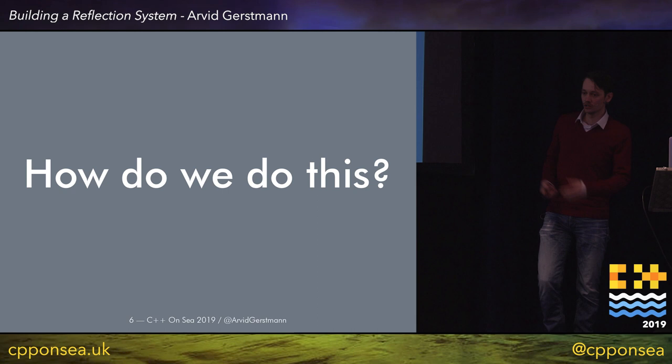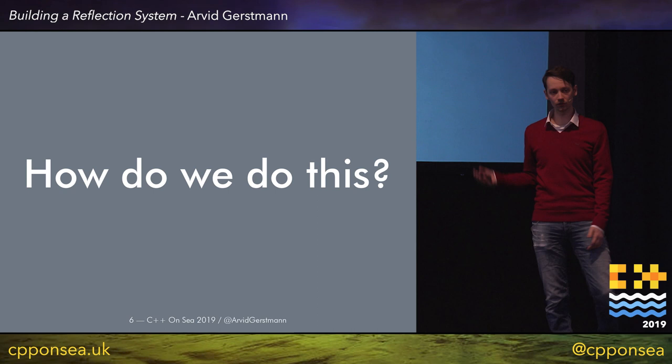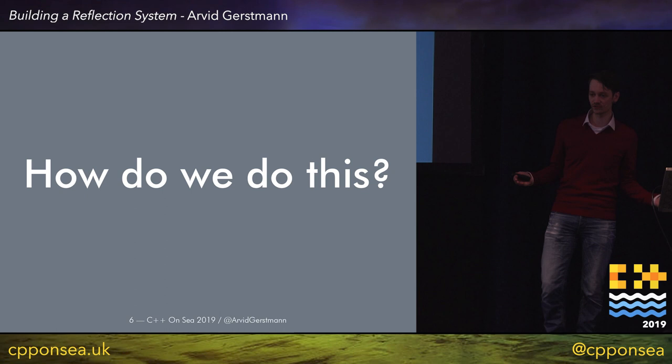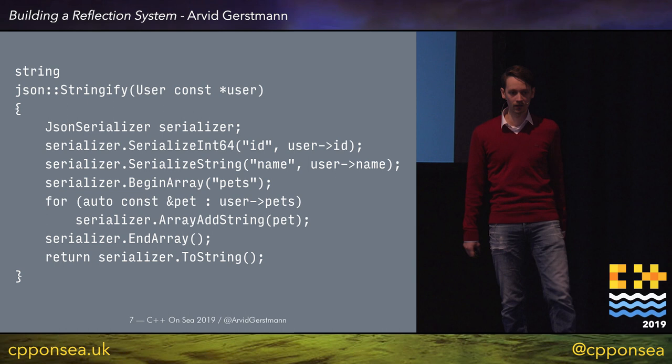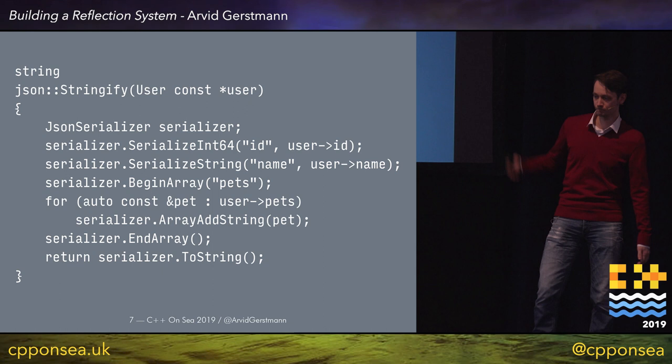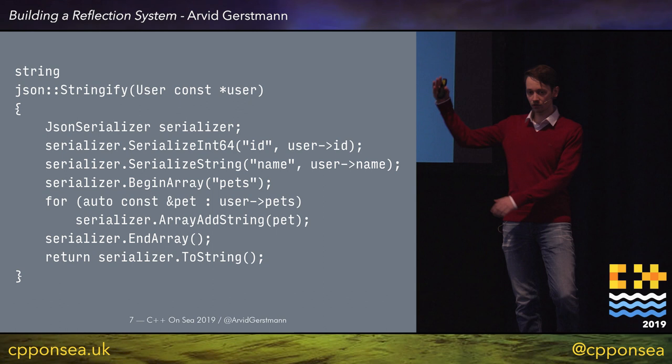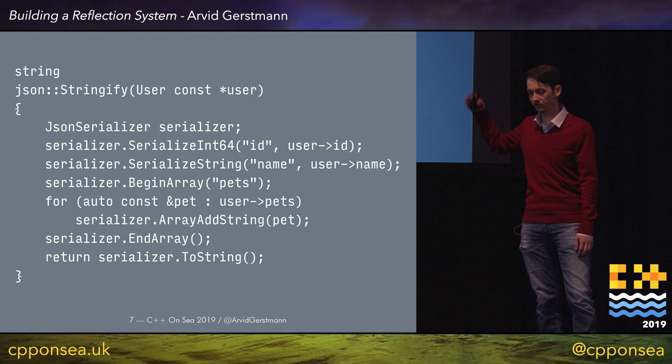The easiest way is probably just to create an overload, so every single struct we have in our program has an overload for JSON::stringify. We then make use of a JSON serializer or another JSON library to create the JSON and return it. Here's a little example: we start with a JSON serializer, serialize the ID as int64, serialize the string giving it the name and the value, then start a new array called pets, iterate over all the members in the vector, and return a string.